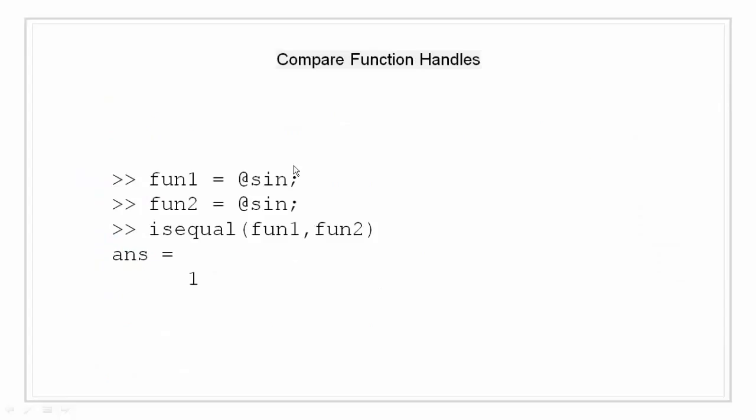Comparing handles constructed from named function. MATLAB considers function handles that you construct from the same named function to be equal. So if we do a comparison using the isequal function for two same handles we will get value of 1 saying that yes they are equal. Even if we save these handles to a mat file and then load them back into workspace they will still be considered as equal.